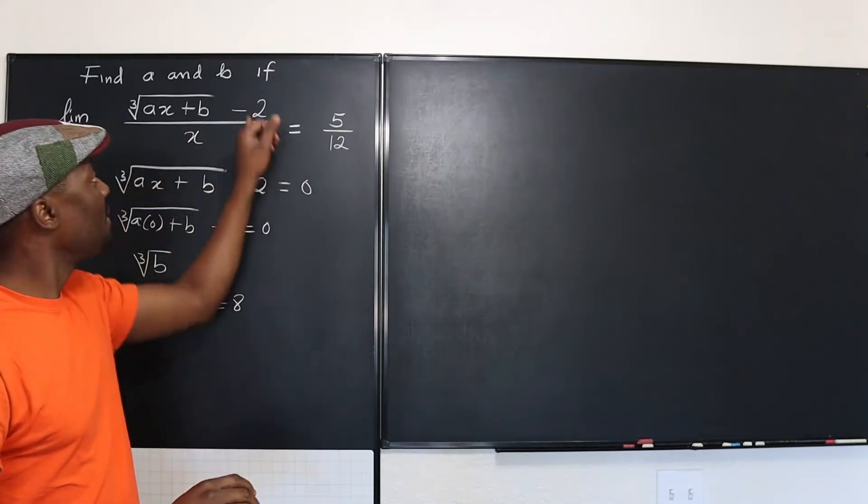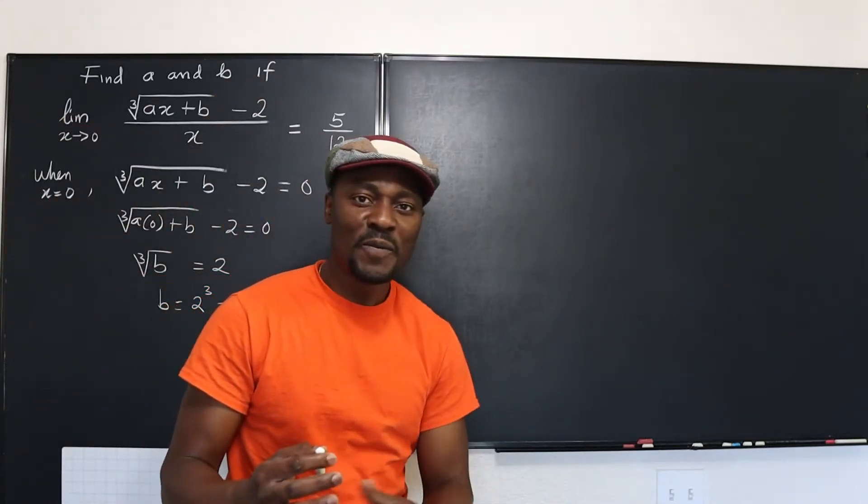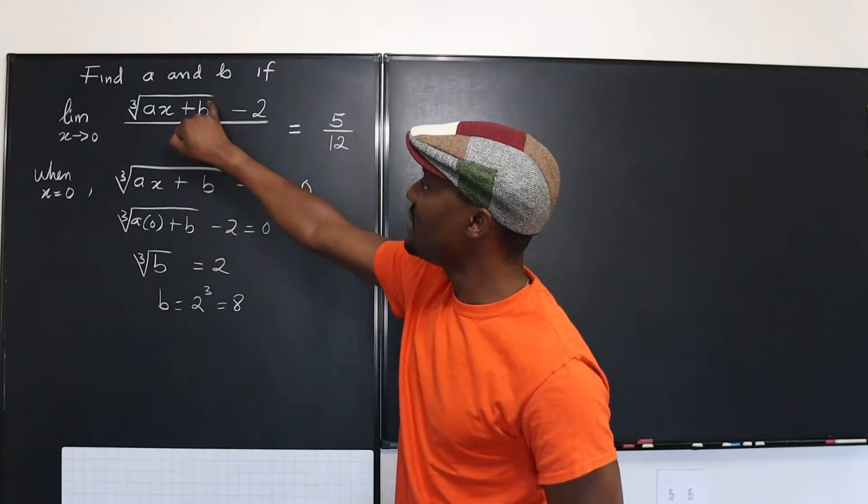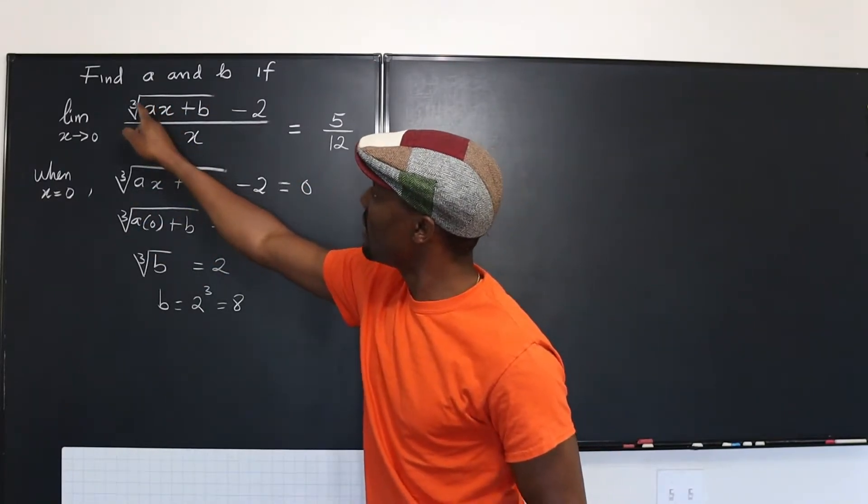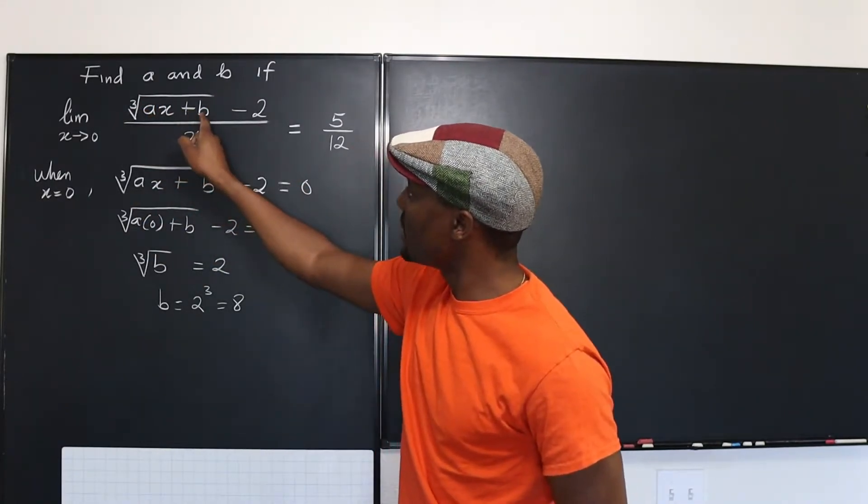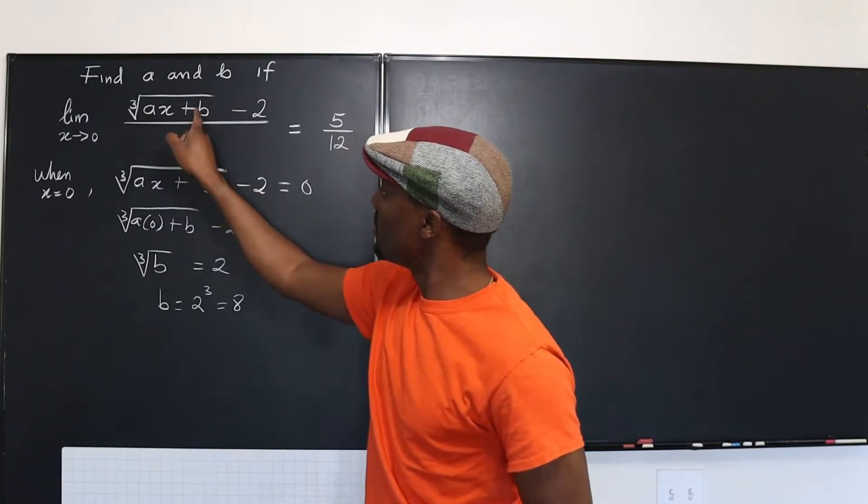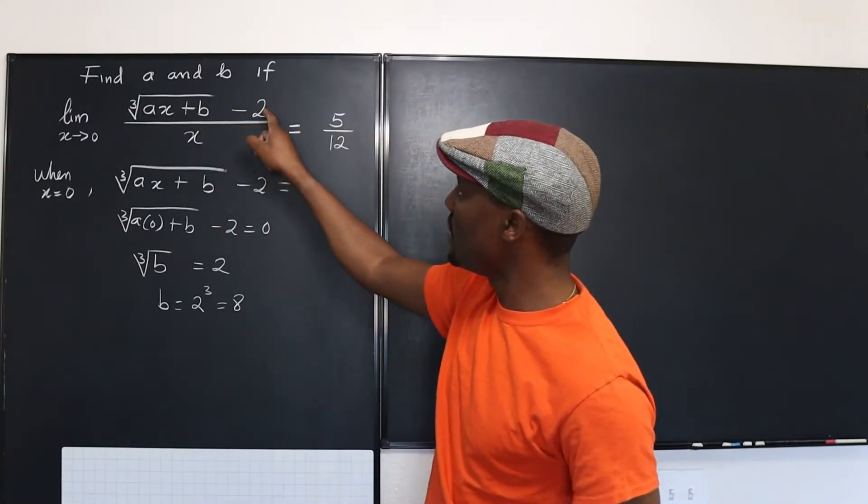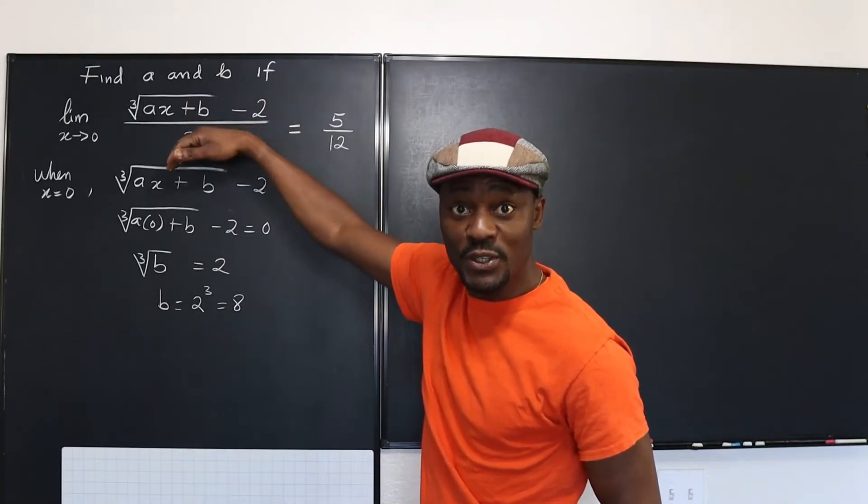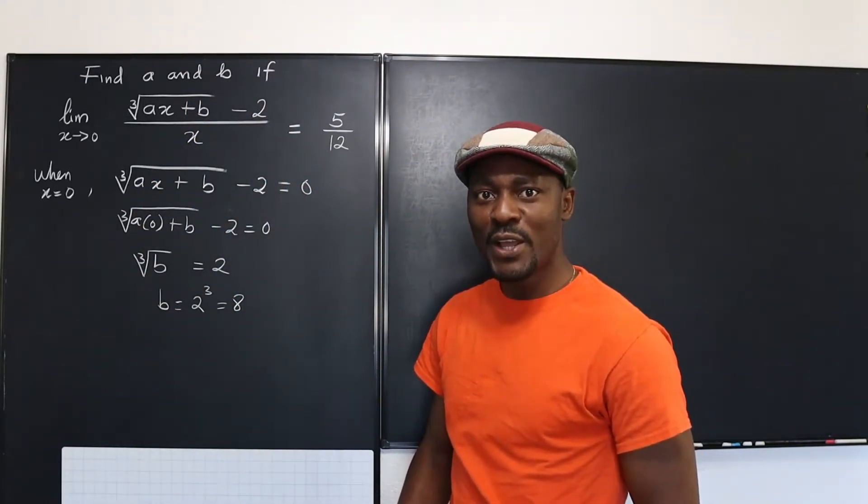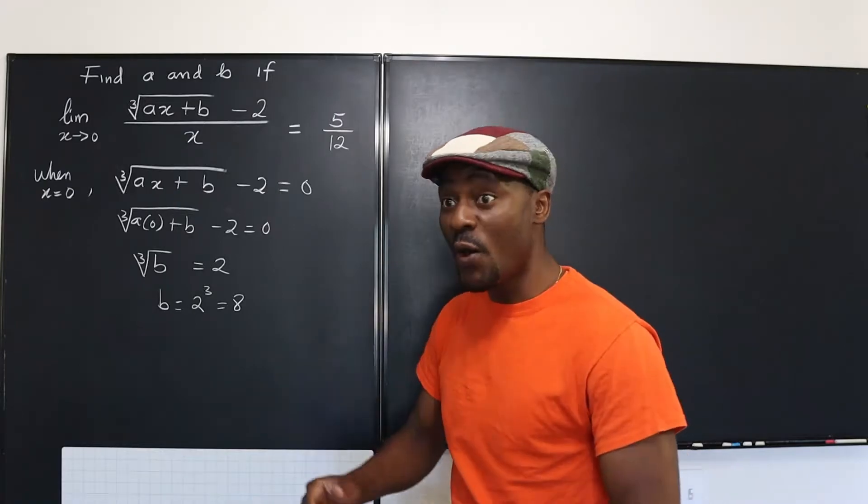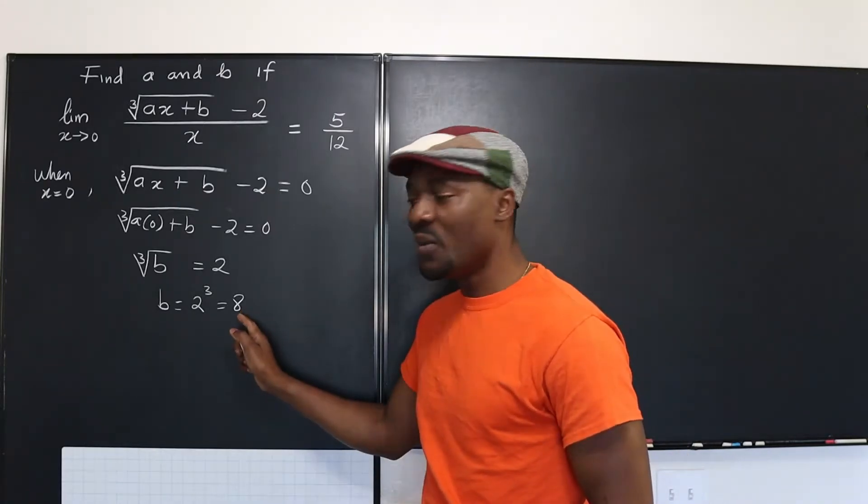So we have solved the second part of this problem because now we know that this must be eight so that when you plug in zero here, it's going to be zero plus eight. Now you take the cube root of eight, that's two, two minus two gives a zero. So you have the zero over zero situation. And now we can apply L'Hopital's rule to this function because we know that this is going to work out.